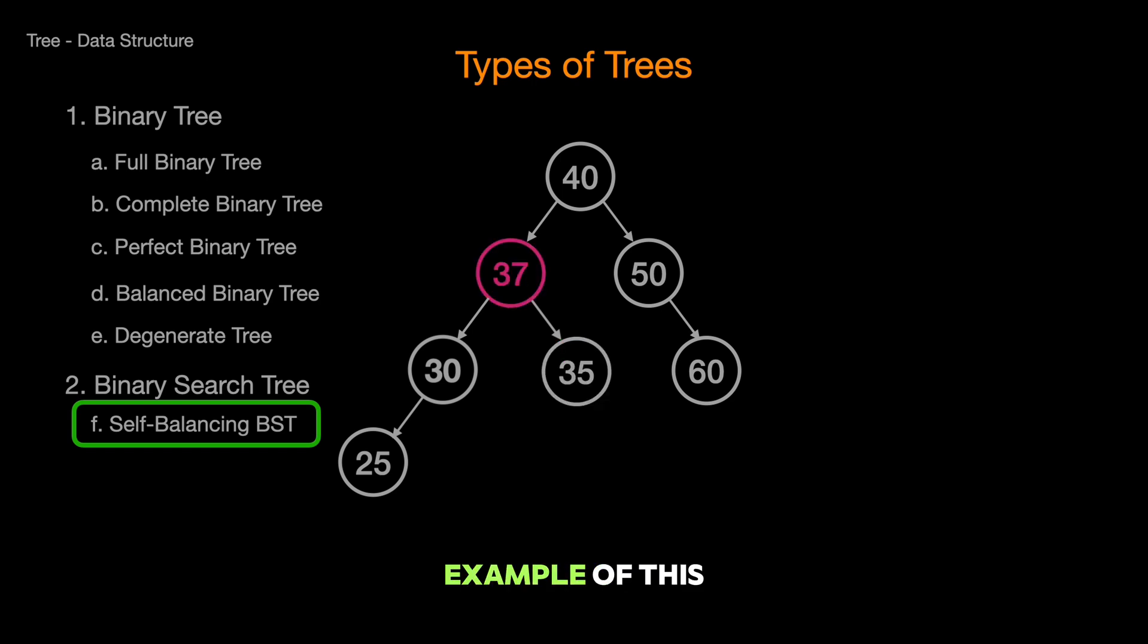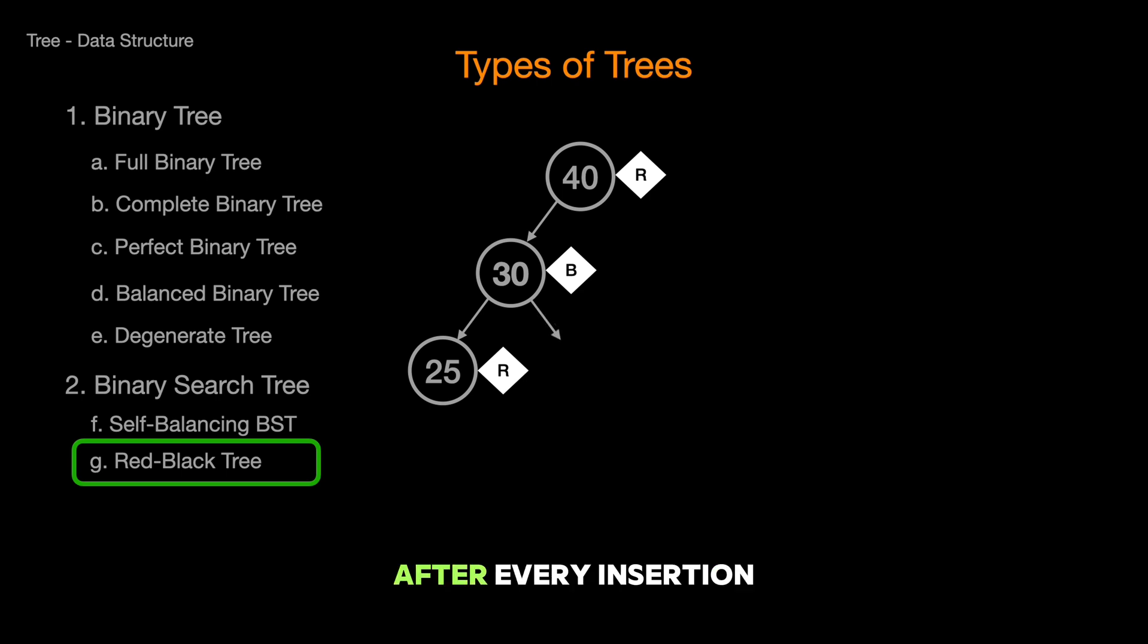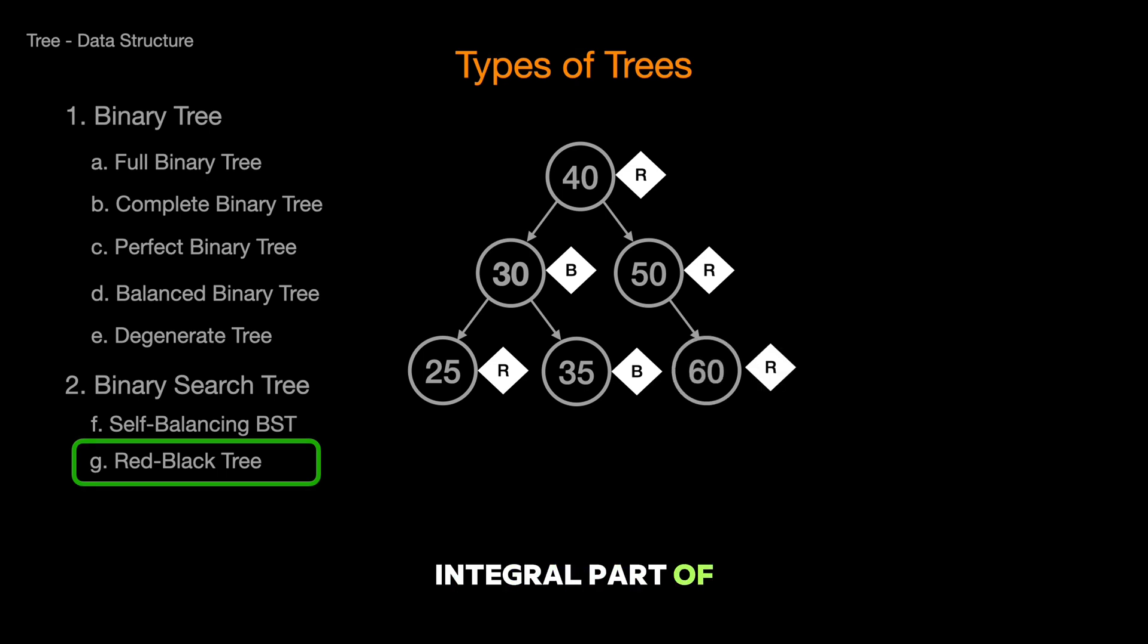And a shining example of this is the red-black tree, a self-balancing BST that follows specific rules to ensure the tree remains balanced after every insertion and deletion. The name comes from the color coding of the nodes, which is an integral part of how the tree maintains its balance. Think of it as a traffic light system that regulates the flow of data to maintain speed and efficiency.